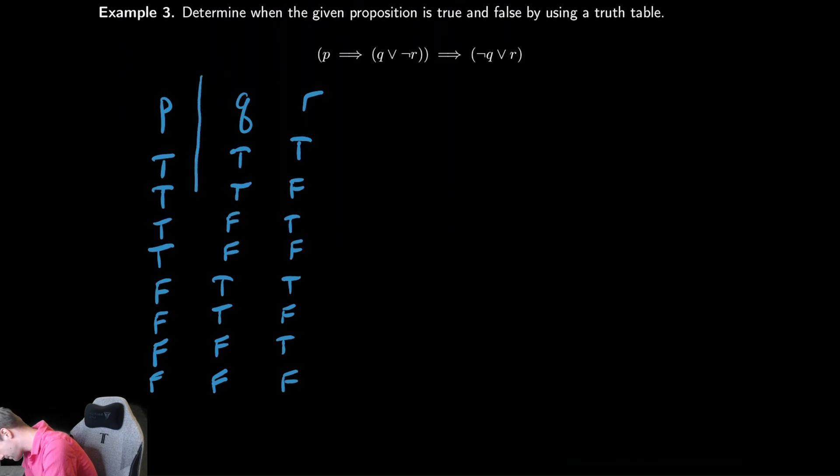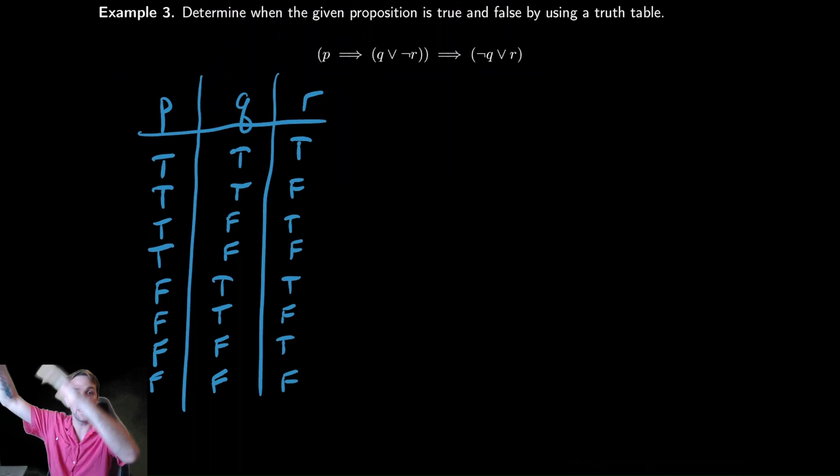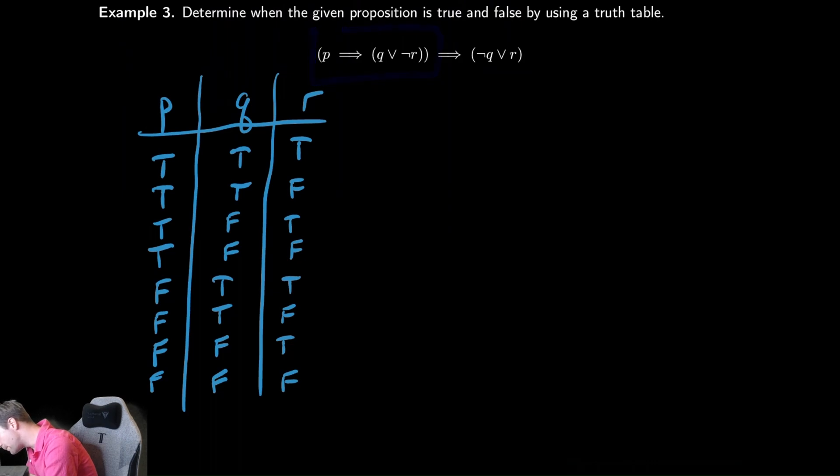Let's do exactly what we said before and start with the innermost parentheses. You might say there's kind of two innermost parentheses—this thing on the left and this thing on the right of the implication. I'm going to start with the one on the left, fully analyze all of these things, and then combine it with what's going on over here. We're going to begin with the innermost thing, which is Q and not R.